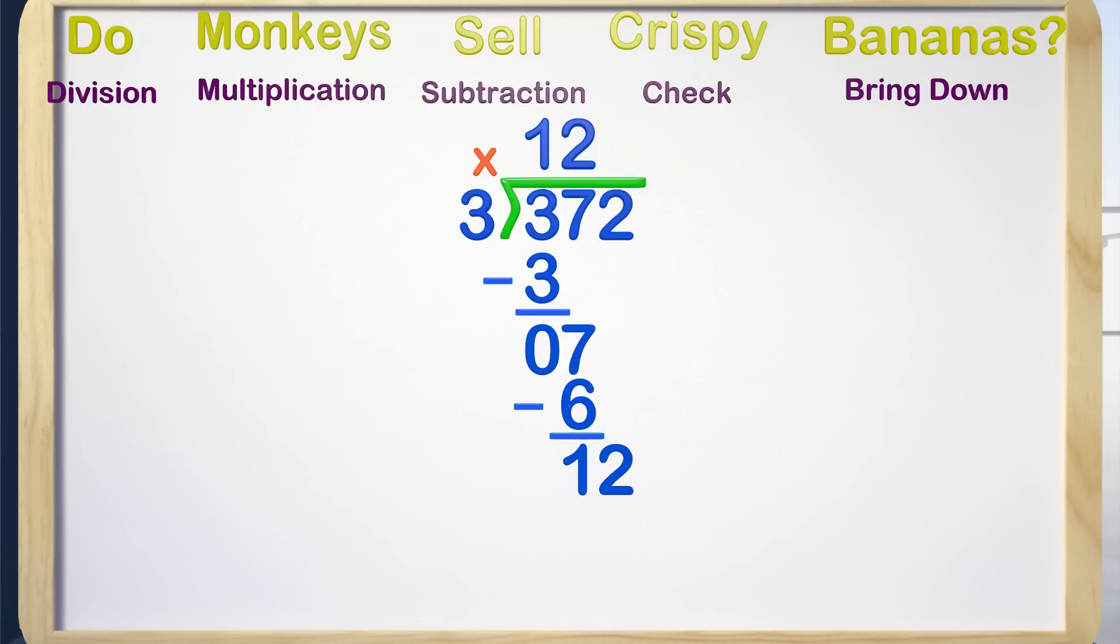Now we start the steps all over again. We first divide: 12 divided by 3 is 4, so we write a 4 up above for the answer. Now we multiply: 4 by 3, which is 12, and write that below. The next step is subtraction.